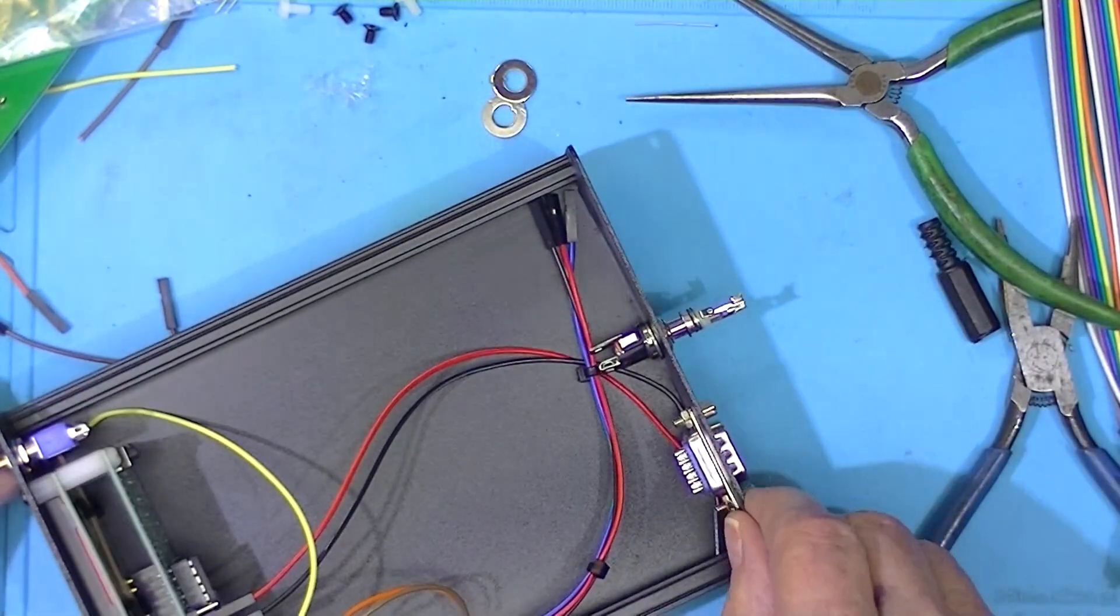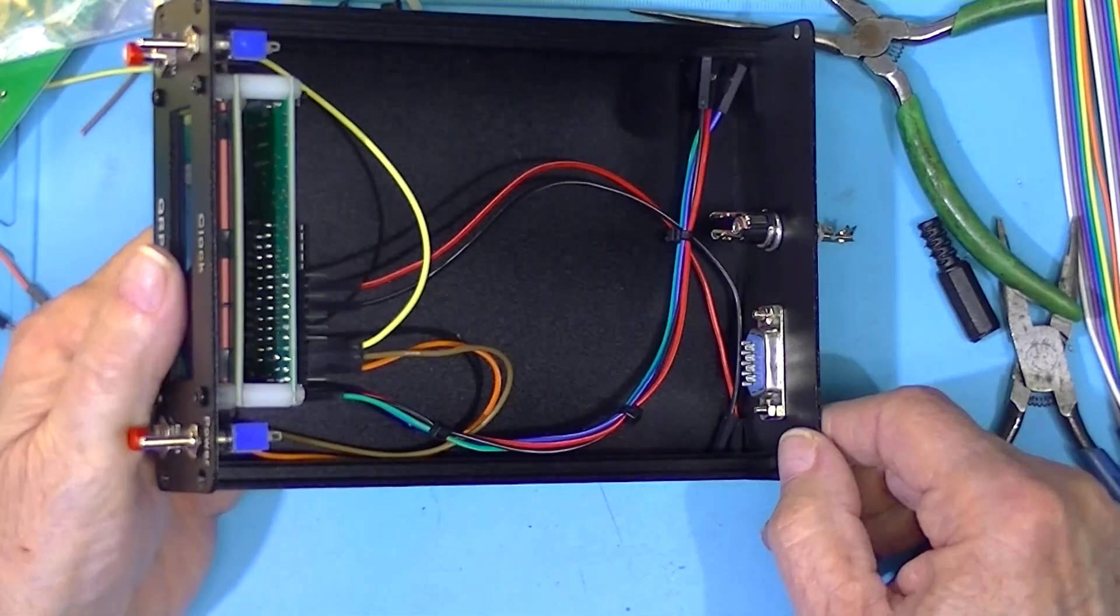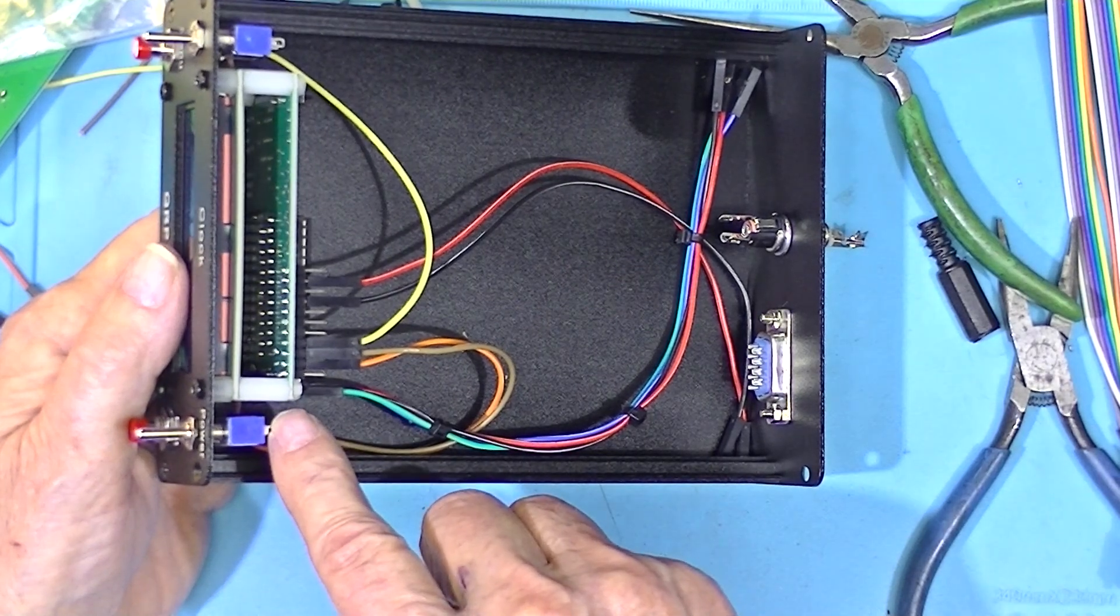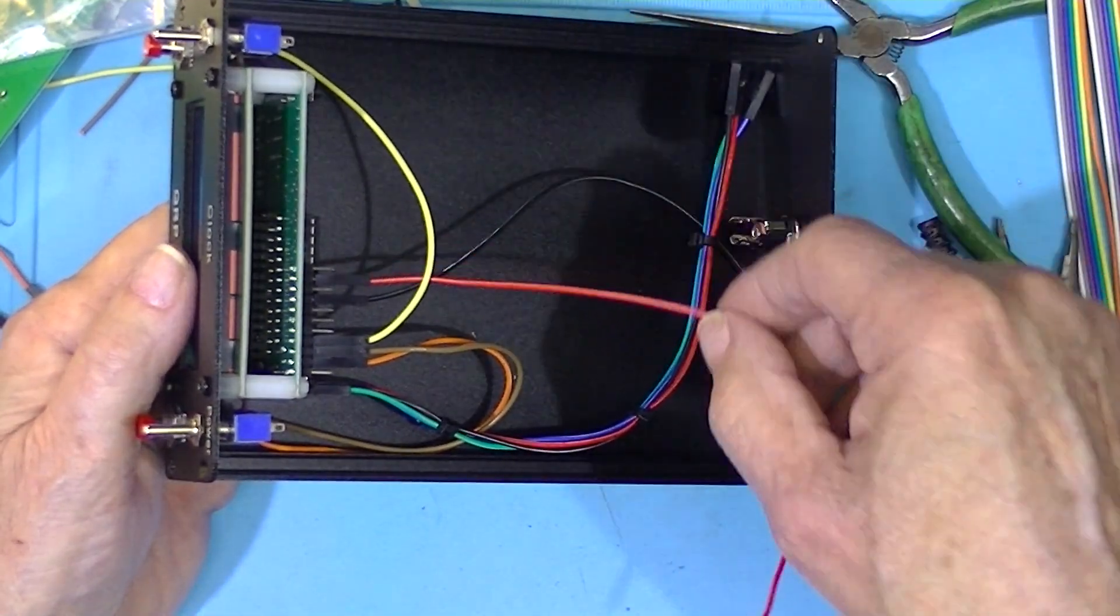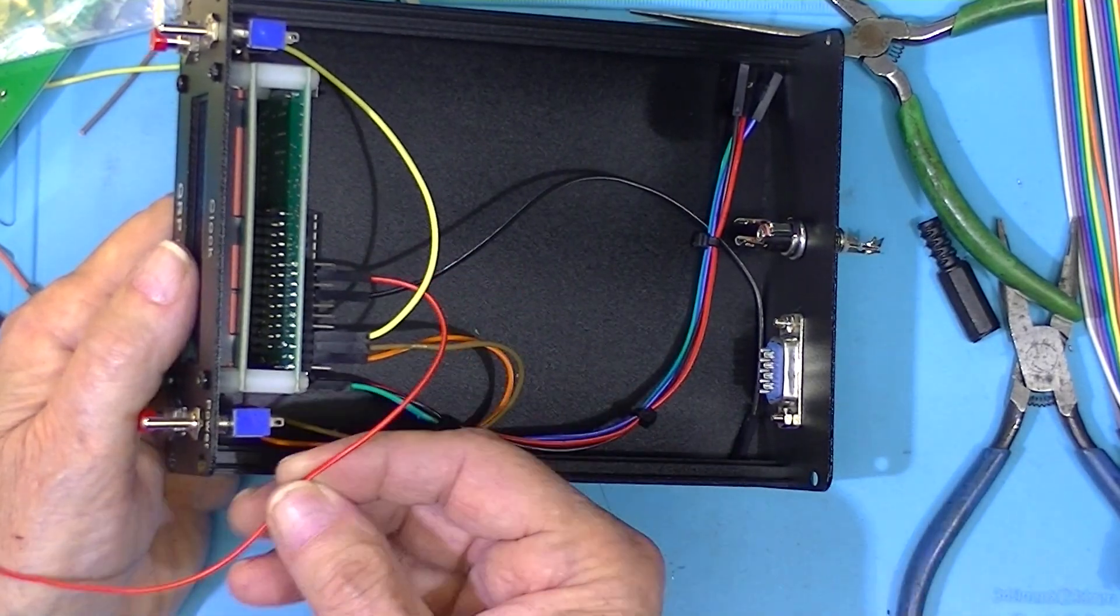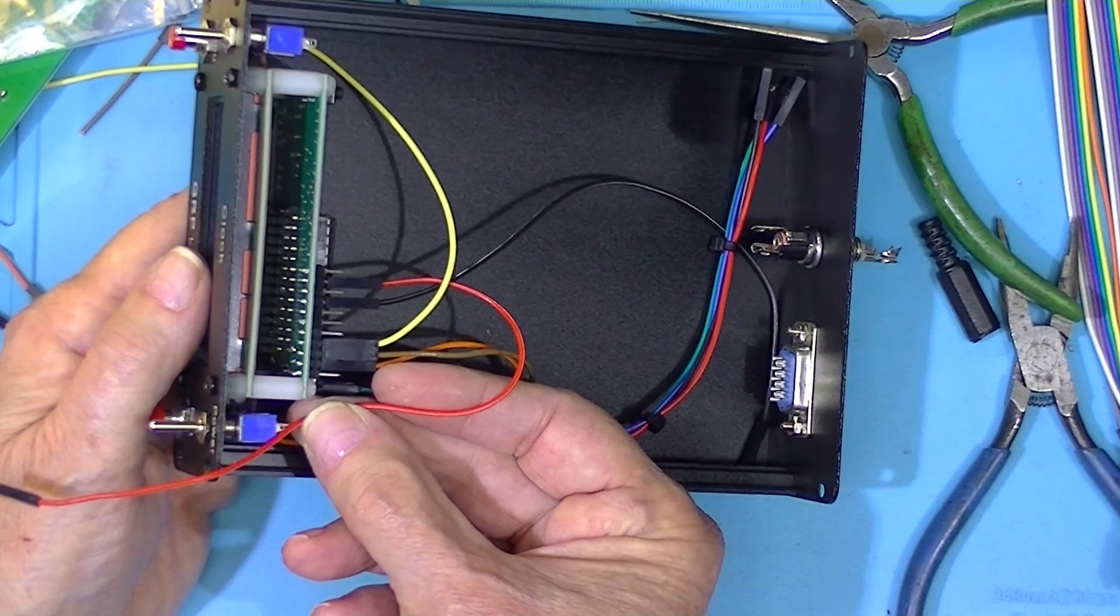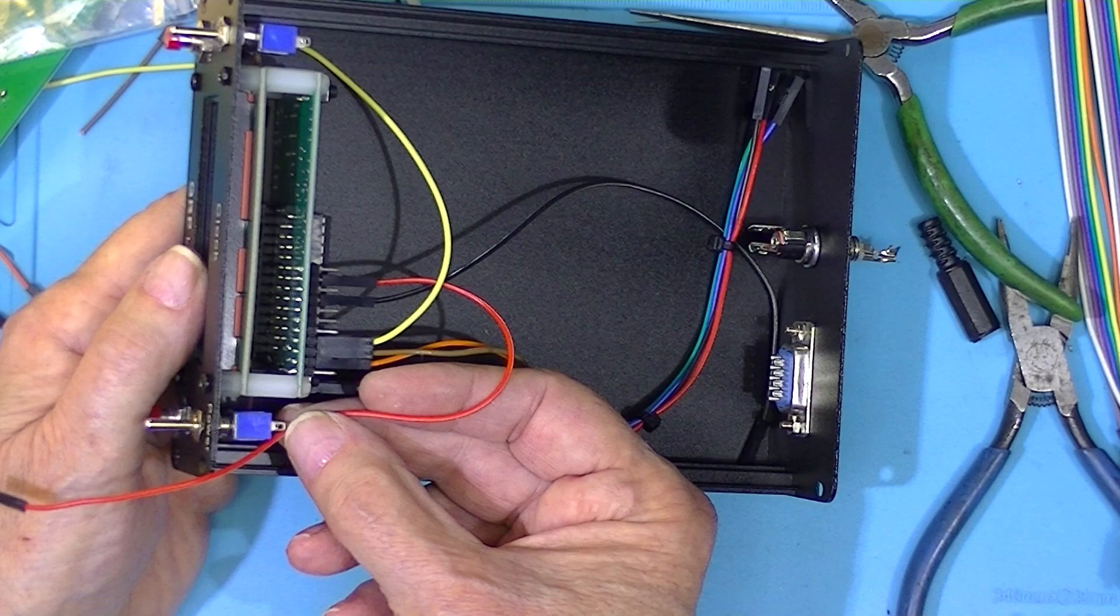The only thing left is the power connections. I intend to take a red wire from here to the power switch, and then cut this Dupont jumper, and that will be the other terminal on the switch.